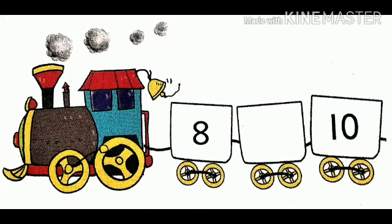Next is number eight and number ten. What comes after number eight? After eight comes number nine. We will write here number nine. So, we have found all the numbers which were missing.